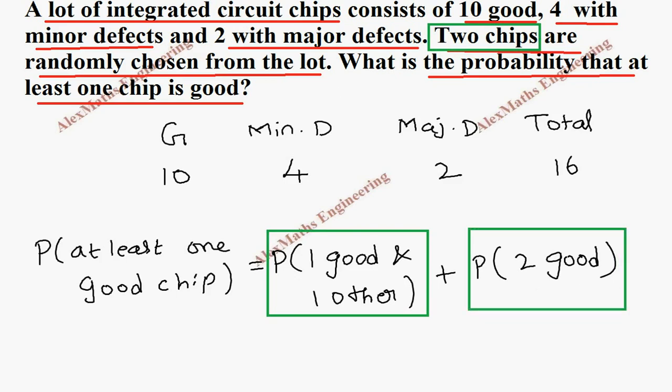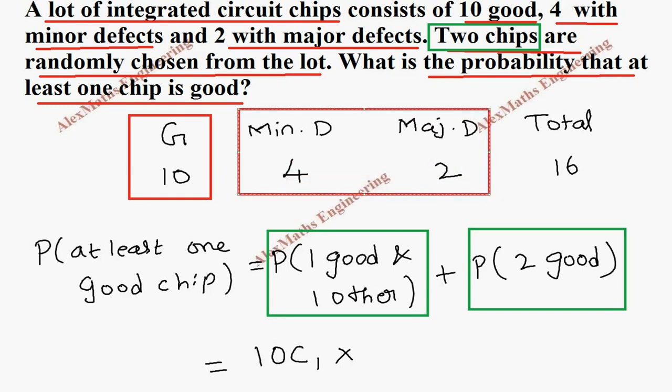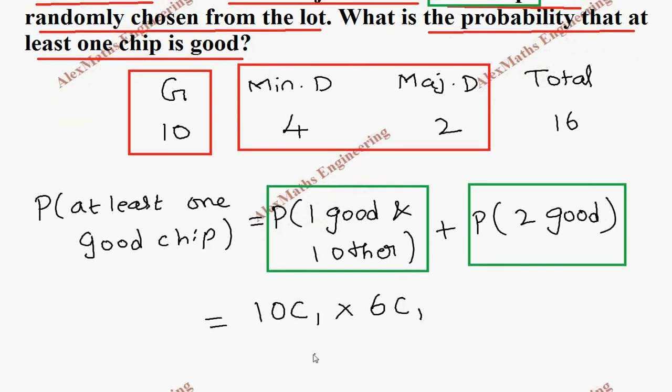Now coming to the first case, when one good, that one good will come from this 10 good, so the chances is out of 10 we select one, so 10C1, and one other will come from the remaining. The remaining is 6, 4 plus 2, so from the 6 we choose 1, and from the total we are choosing 2, so it is 16C2.